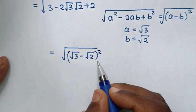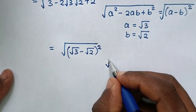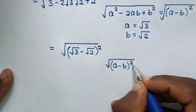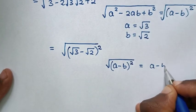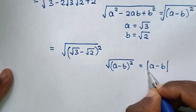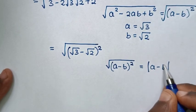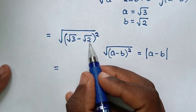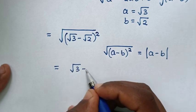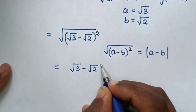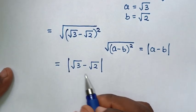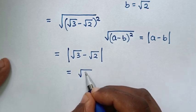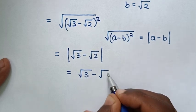Then this step is in the form of square root of a minus b bracket squared, which is equal to the absolute value of a minus b. That means if this value is negative, then it will be made positive, so it will be equal to the absolute value of square root of 3 minus square root of 2. But square root of 3 minus square root of 2 is a positive value, so it equals square root of 3 minus square root of 2.